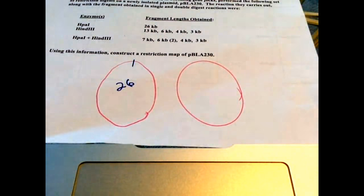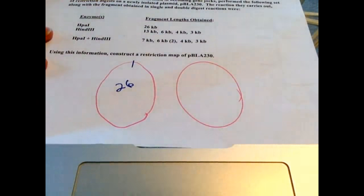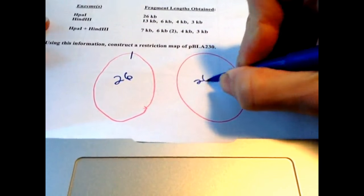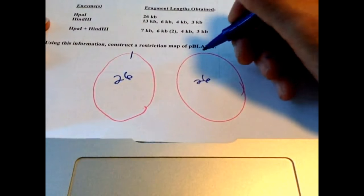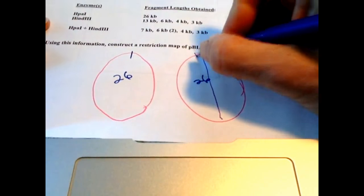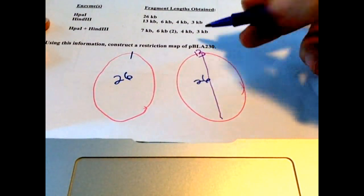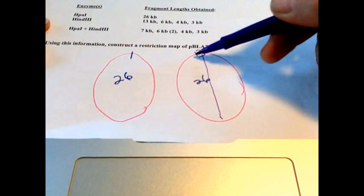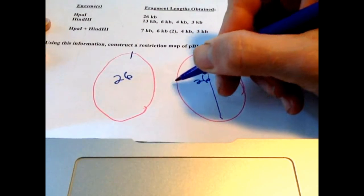Now hind, I could do a second circle if I really wanted to see how these digest individually. So the second one, hind 3, the plasmid is still going to be 26 all the way around. So, with hind, it's going to make a 13, which I know is half. I like to always look at this kind of like a clock. So it makes a 13 kilobase here, and then that means the other side will add up to 13.